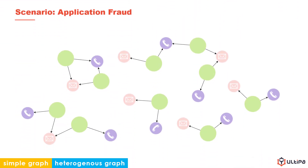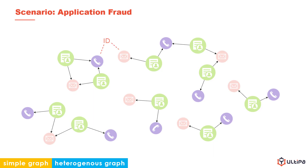This graph is also heterogeneous and a simple graph. The pink and purple nodes represent email address and phone number. The green nodes are application forms that require personal emails and phone numbers to be provided. Email address and phone number are usually treated as a combination of ID of a person. A structure normally seen is an isolated triplet composed of an email address, a phone number, and an application filled with them.